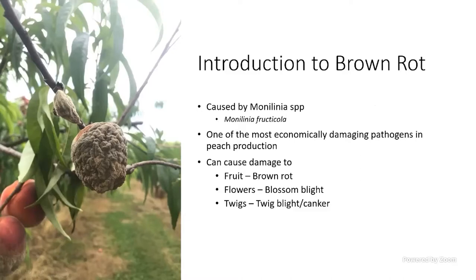When we're looking at controlling brown rot, we need to look at it as a season-long management strategy. Brown rot gets a lot of the publicity because, as you can see in the picture on the left, you spend all year producing this nice ripe fruit and you get within a week of harvest and two days later it looks like that.